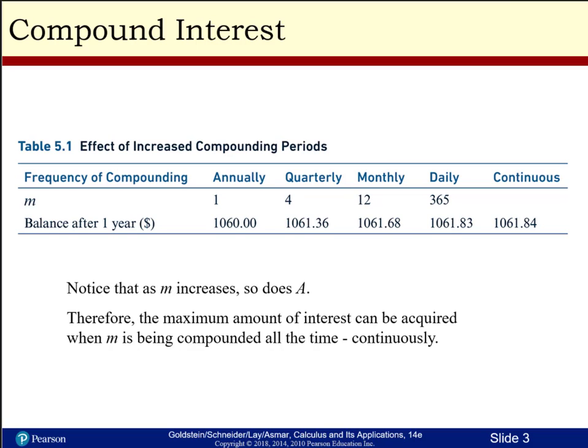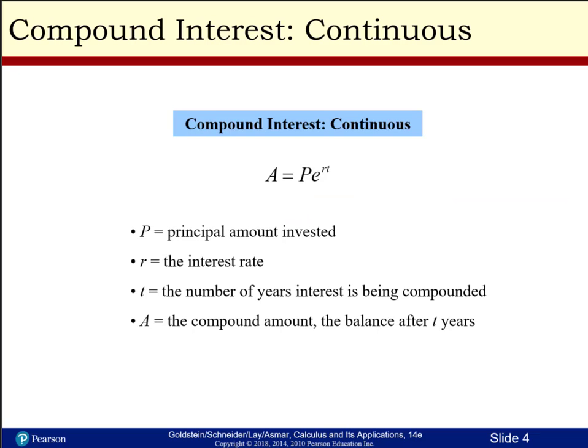In Table 5.1 we're going to look at the effective increase by compounding periods. With annual compounding, the balance after one year would be $1,060; quarterly, $1,061; monthly, $1,061.68; and daily — see how it doesn't really go up much with increasing compounding period. For continuous compounding, which we'll look at next, the amount would be $1,061.84. As m increases, the frequency of your compounding increases and so does your amount, so the maximum interest is acquired when compounding continuously.